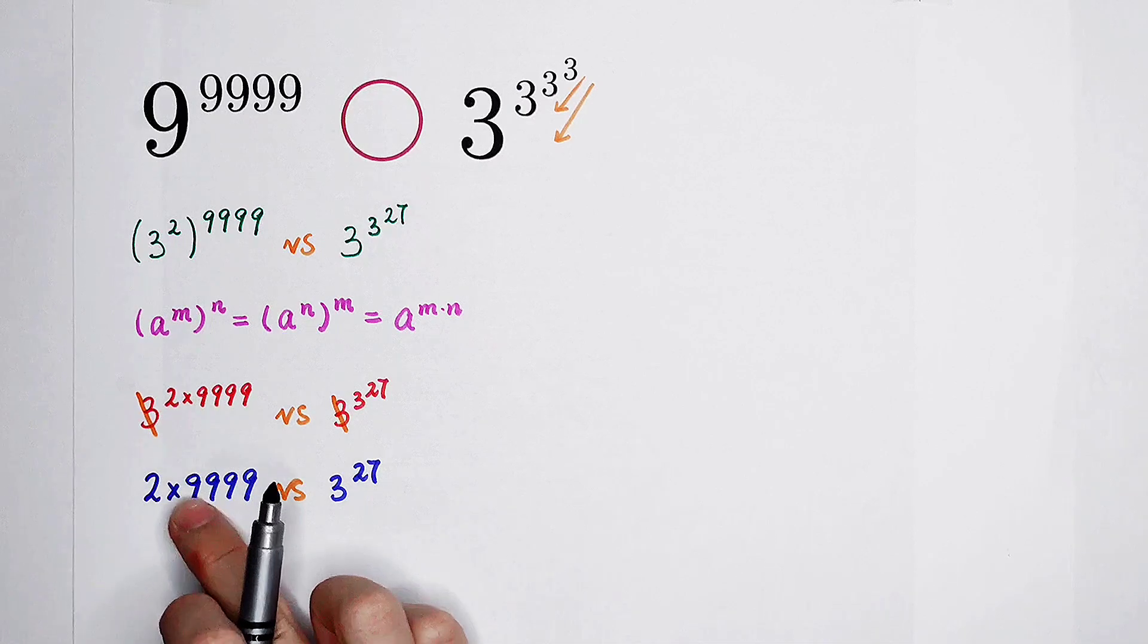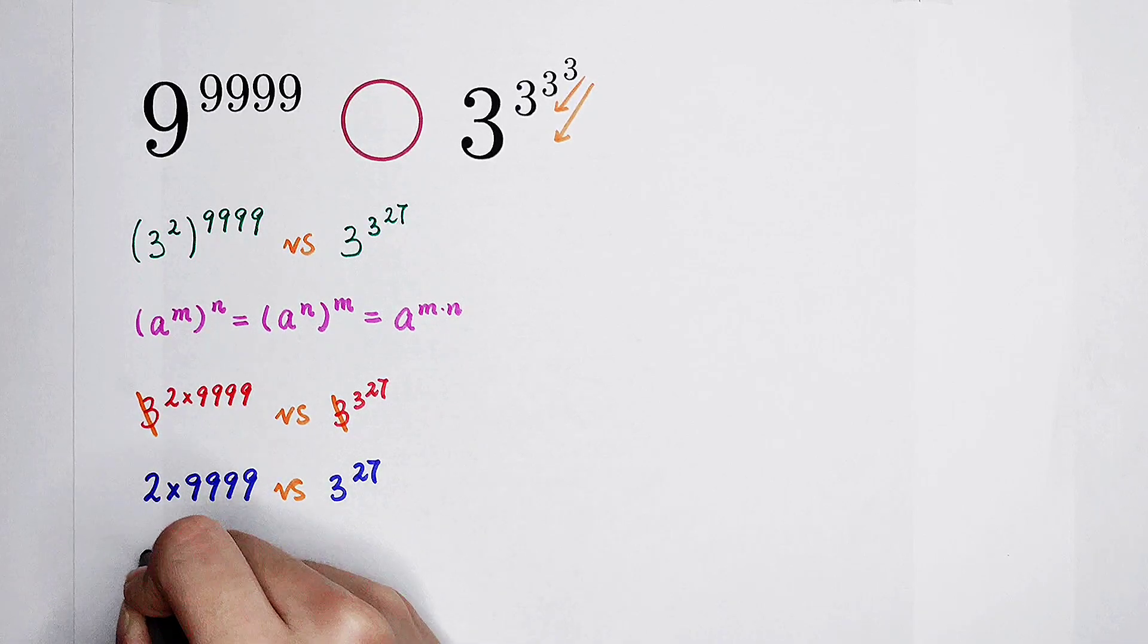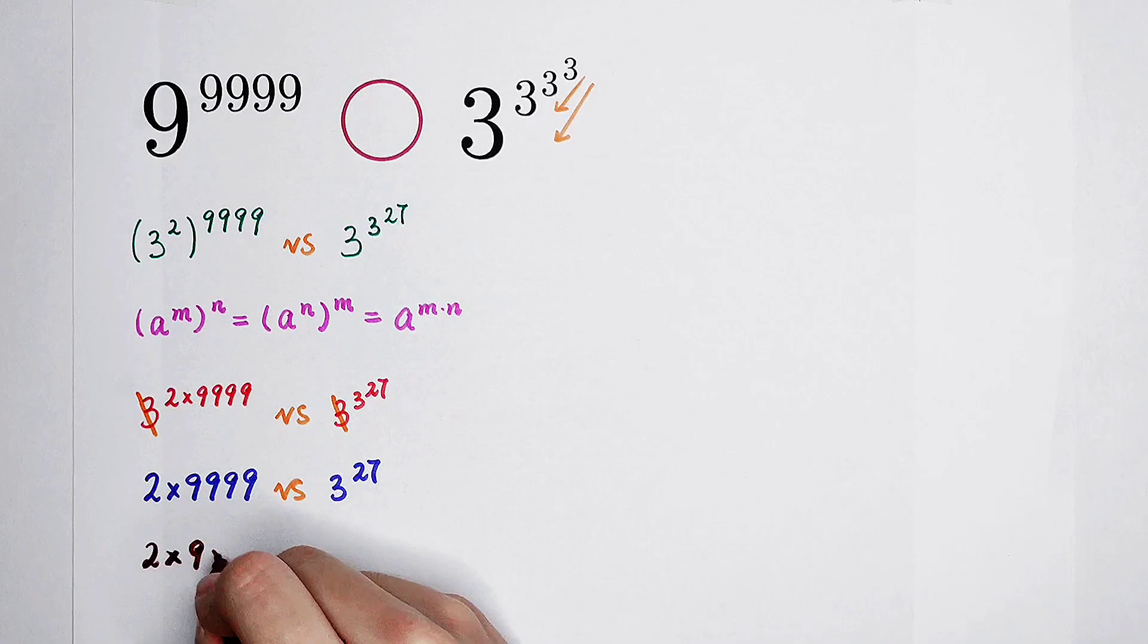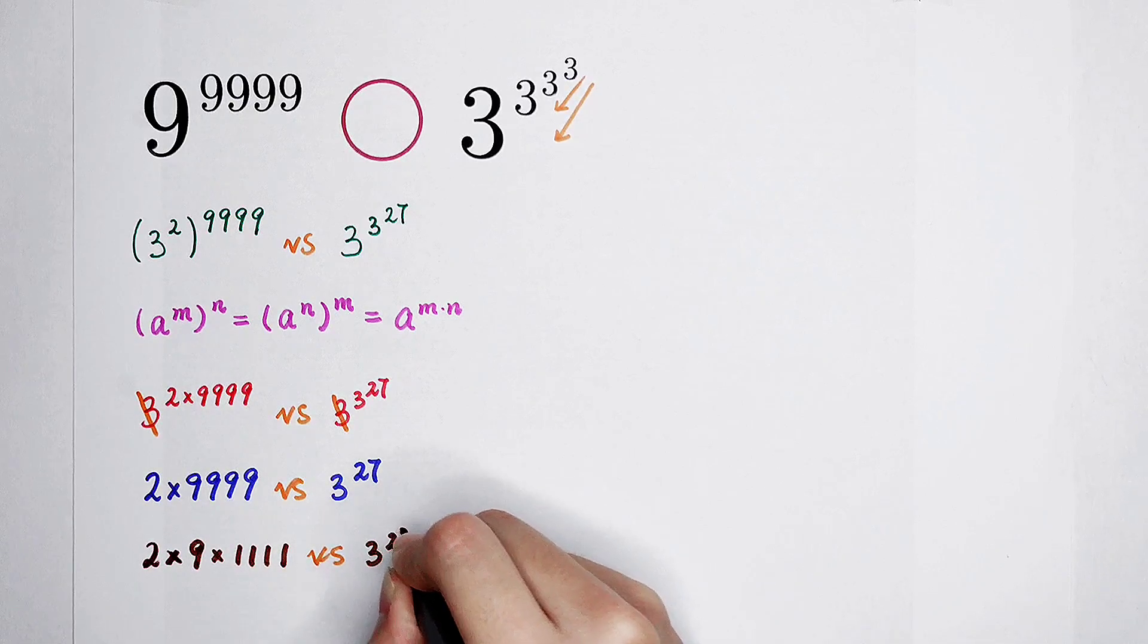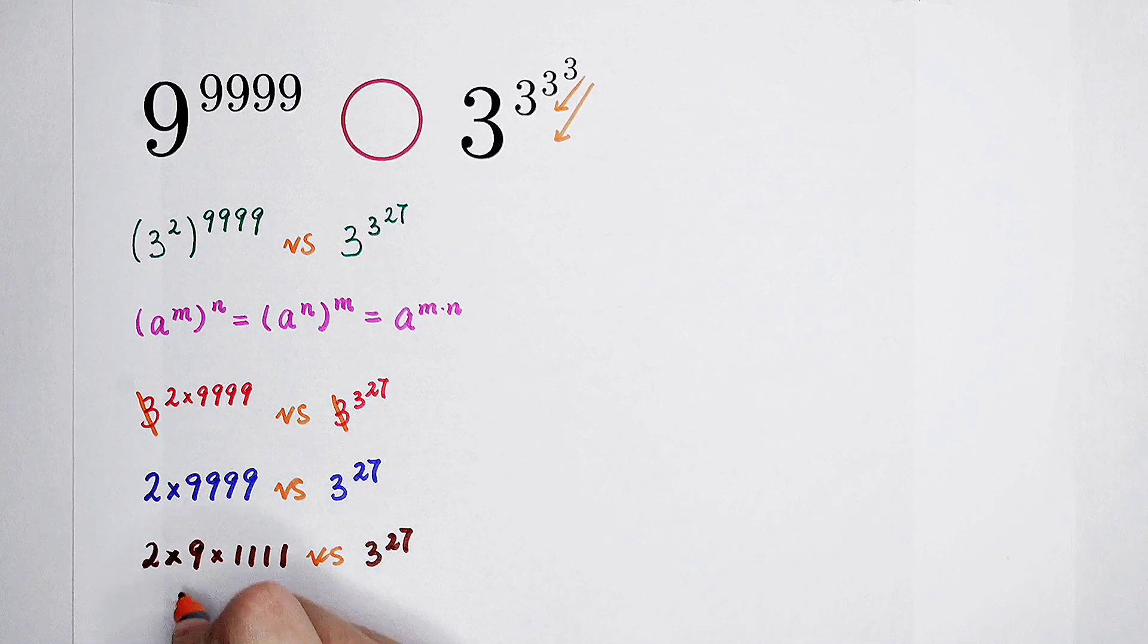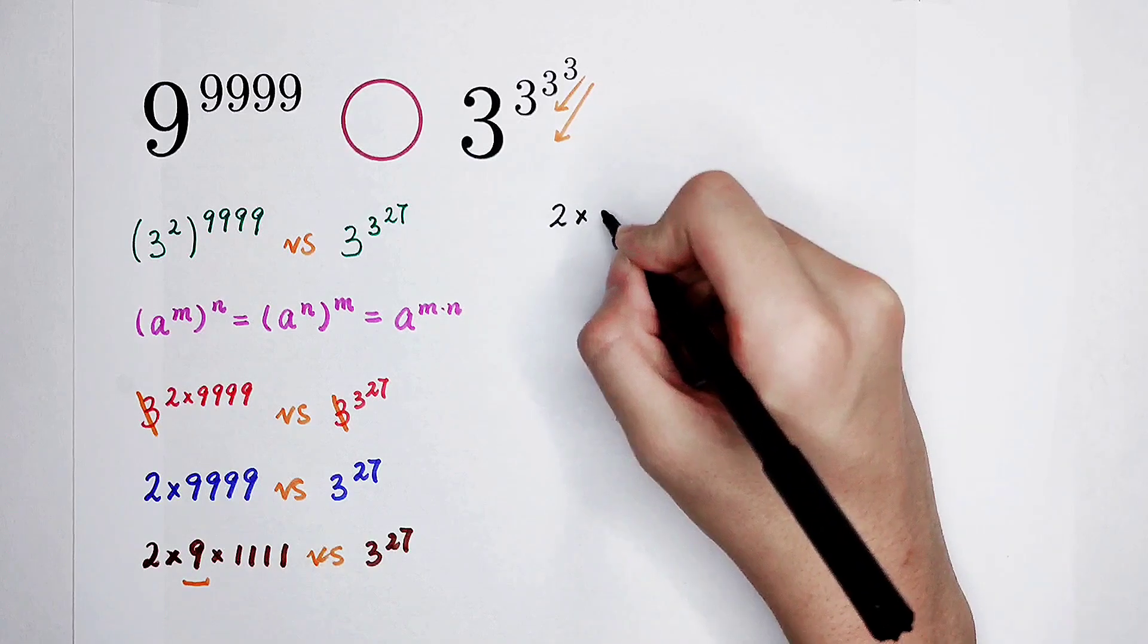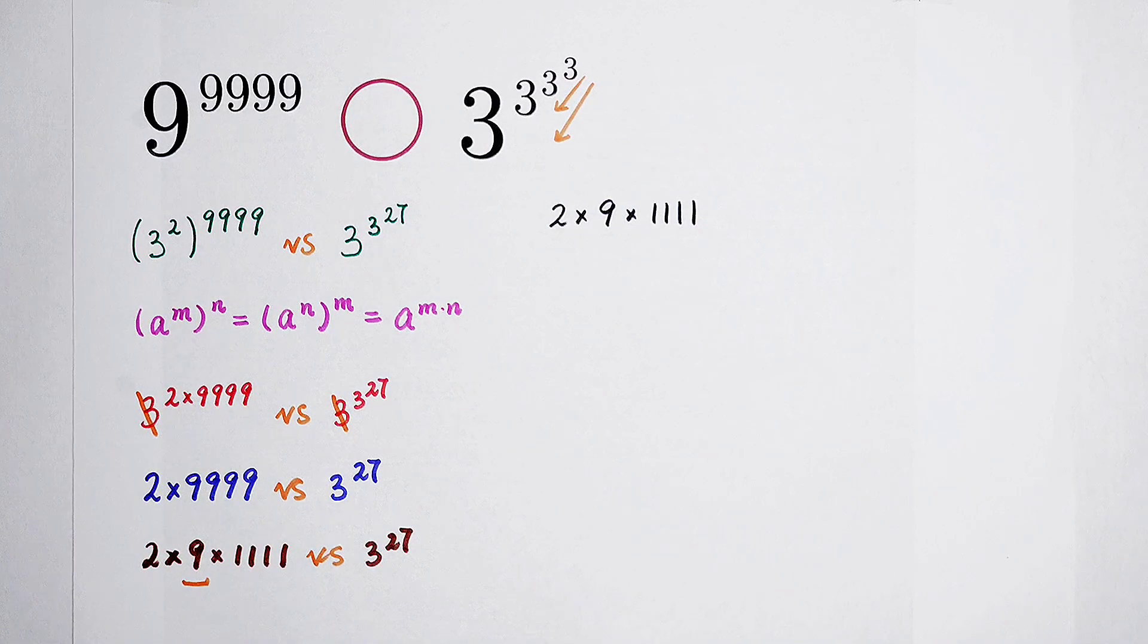Of course 9999 is an integer multiple of 9. It can be written as 2 times 9 times 1111. The right hand side is still 3 to the power of 27. 2 times 9 times 1111, and 9 is 3 squared. So now we can divide by 3 squared on both sides.